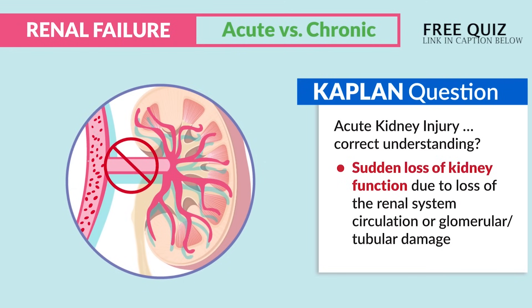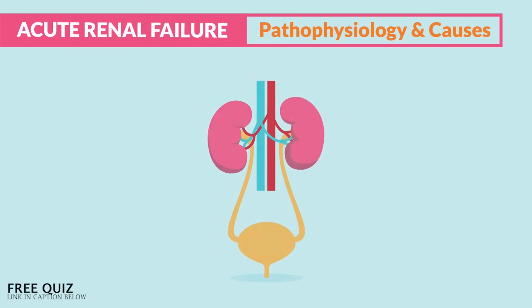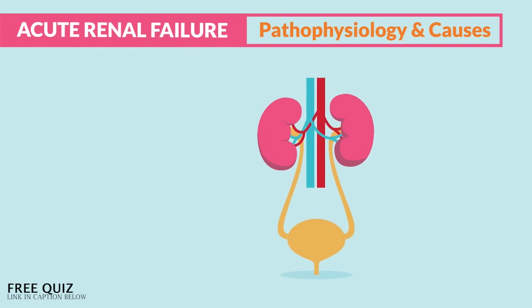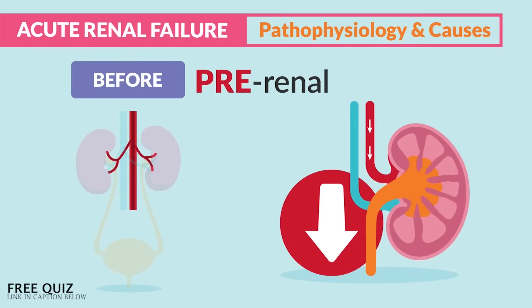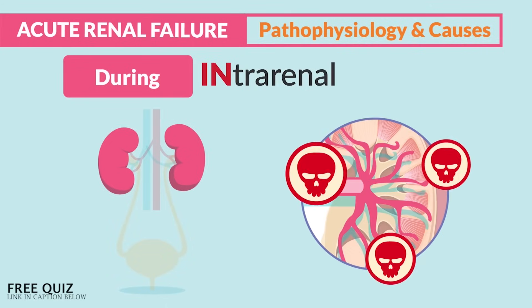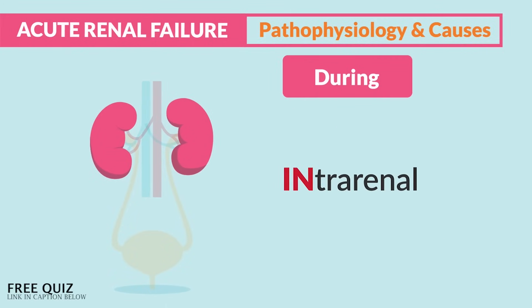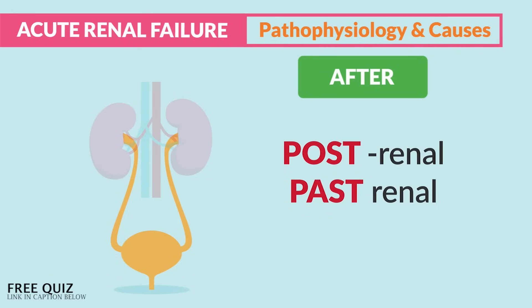For pathophysiology and causes, let's cover acute kidney failure first. In acute kidney failure, it can result from three types. Pre-renal is decreased blood flow to the kidney — think 'decreased perfusion' with pre-renal. Intra-renal is damage inside the kidney — think 'in the renal' for intra-renal. If the cause is after the kidney, that's post-renal — think 'post' for past the renal.